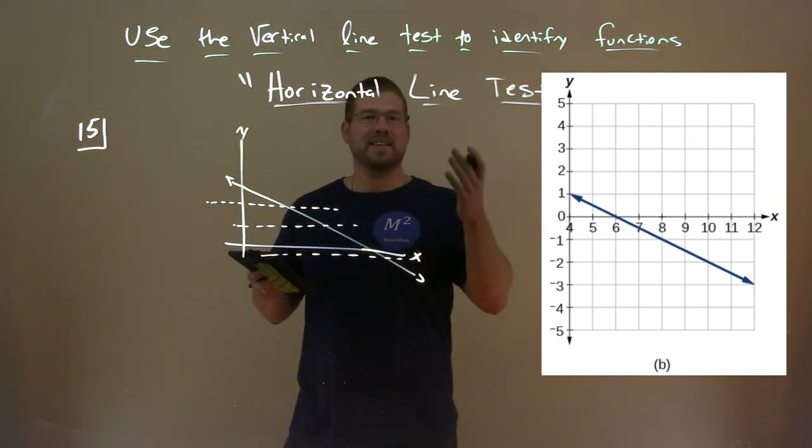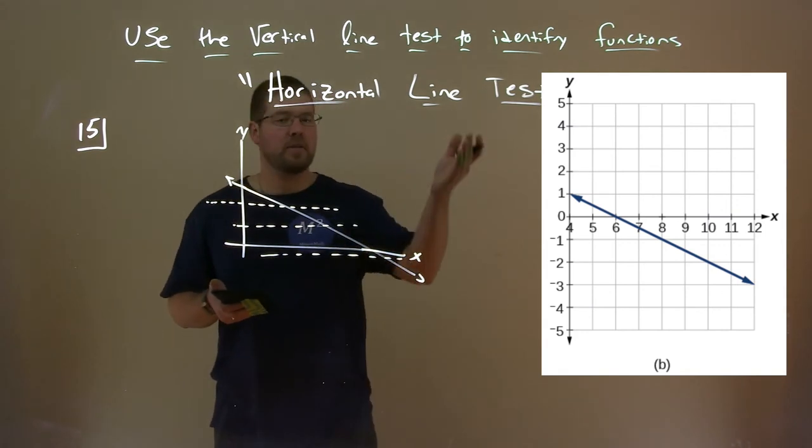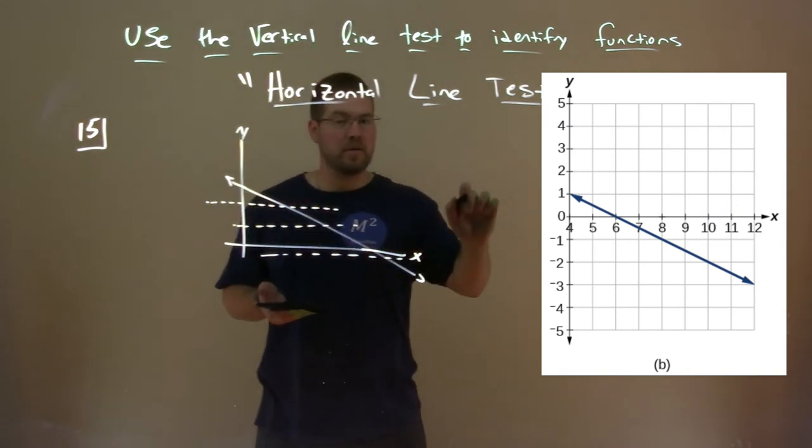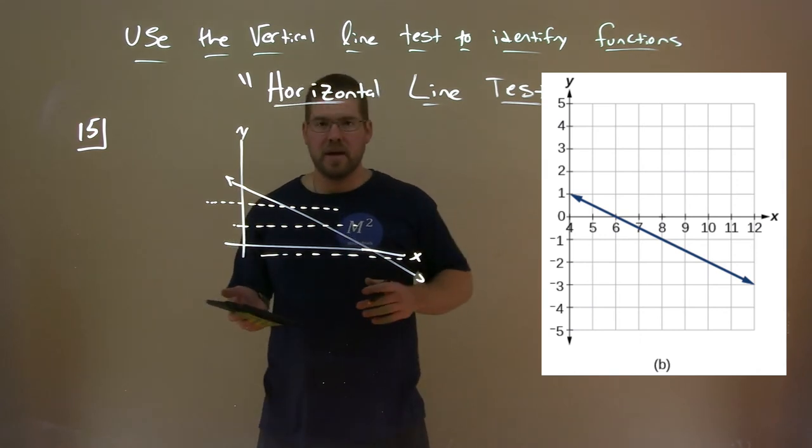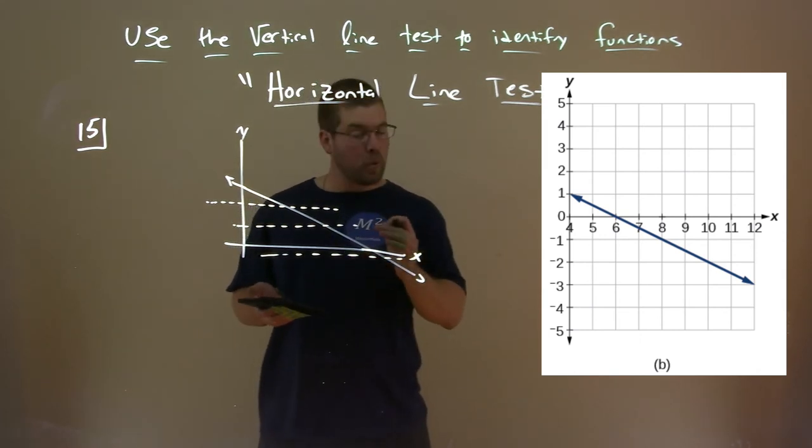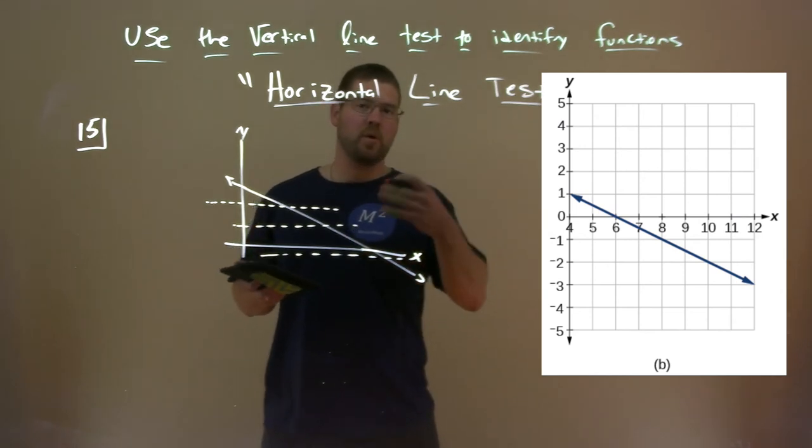So it's actually a pretty easy thing to find. The horizontal line test is quickly look, draw a horizontal line. Do we touch the function only once? We touch it more than once, then it doesn't pass the horizontal line test, therefore not one-to-one.